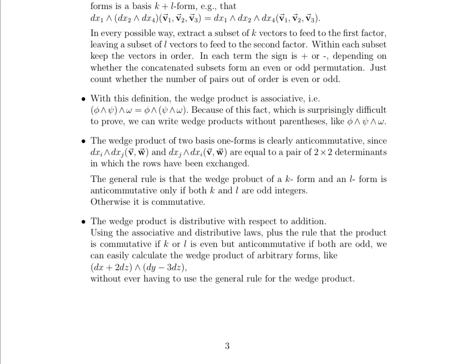The wedge product of two basis one-forms is clearly anticommutative. What's basically happening is that when you compare this two-form to this two-form, it's equal to a pair of 2×2 determinants in which the rows have been exchanged, so it's multiplying the whole thing by negative 1. The general rule is that the wedge product of a k-form and an l-form is anticommutative only if both k and l are odd integers; otherwise it's commutative. That commutativity is going to be your proof 21.2.